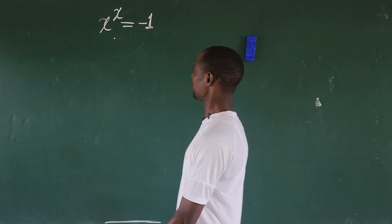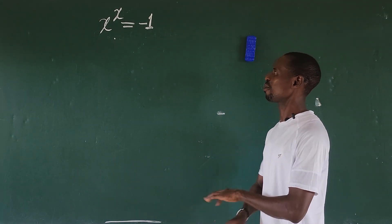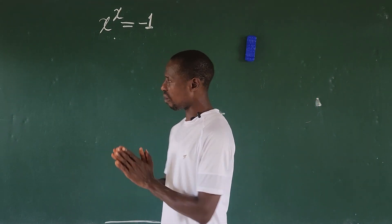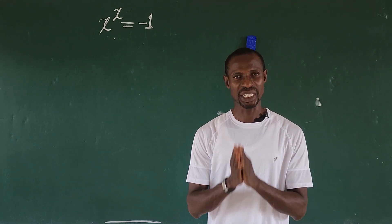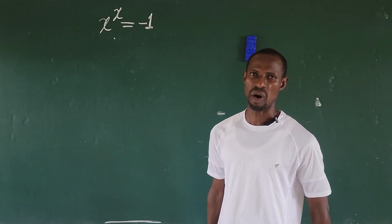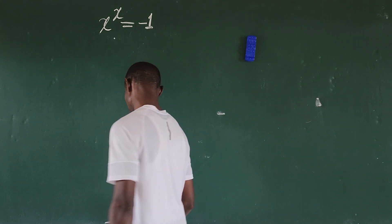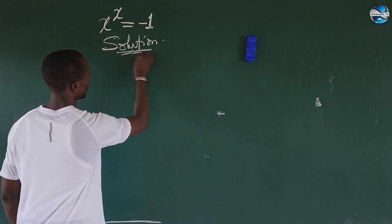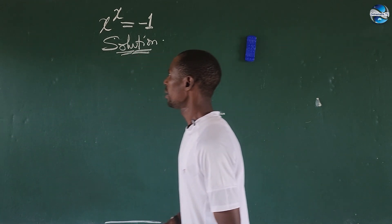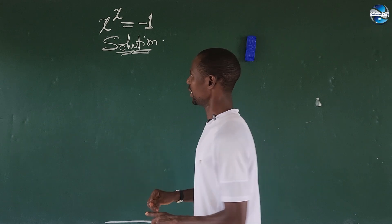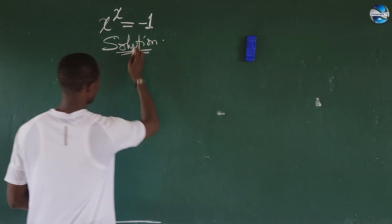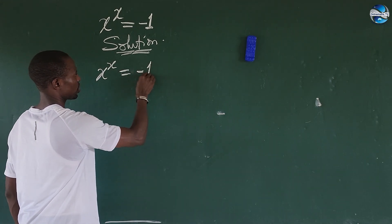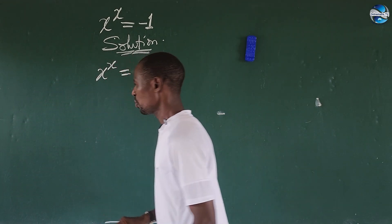Hi, welcome to today's class. Today we have this challenge before us. The question is easy, but if you are asked to solve for the answer which is x equal to minus one, how do you solve for this? So let's solve this without wasting time. The question is x to the power of x equal to minus one.